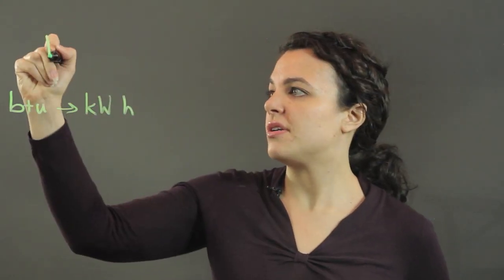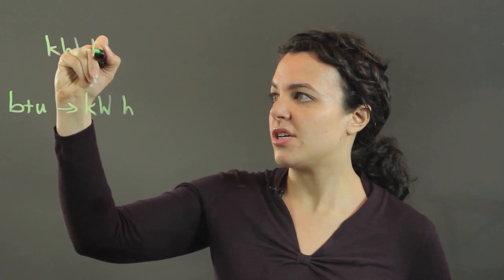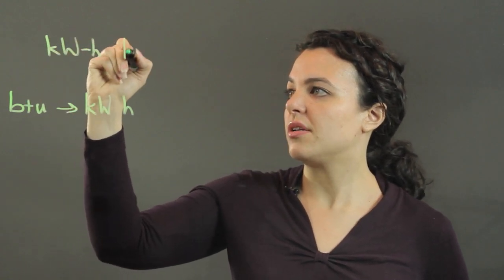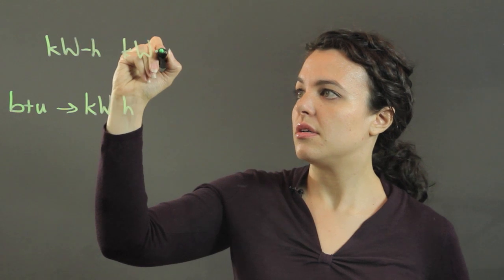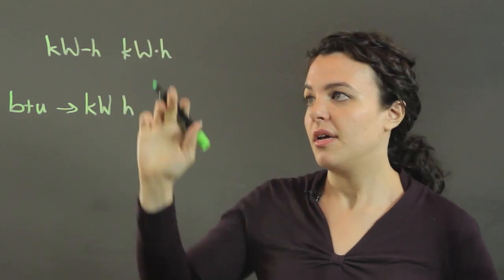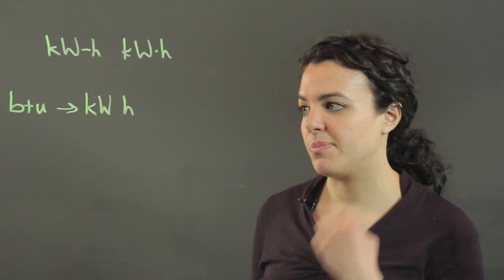Kilowatt hours can also be written as kilowatt dash hour or kilowatt dot h, both meaning that we're multiplying.